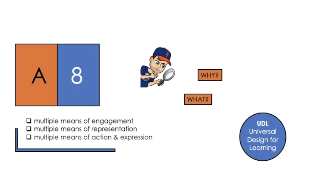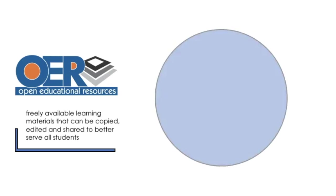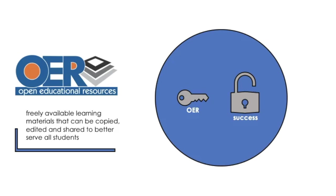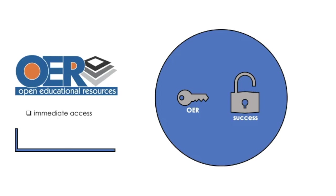Let's take a couple minutes to explore the what of learning. Open Educational Resources, OER, are freely available learning materials that can be copied, edited, and shared to better serve all students. OER can offer several advantages for online learning: they can be made available to students for immediate access to content without waiting for the textbook, they are free, many OER sources update regularly to maintain relevance and currency, and instructors can have control of content and not be dependent on publishers.